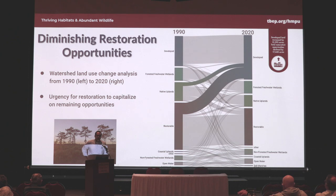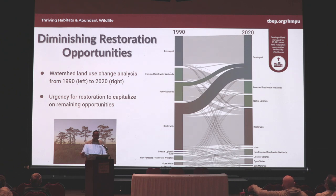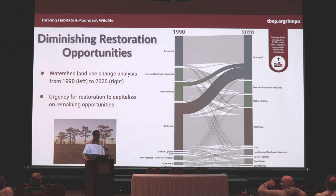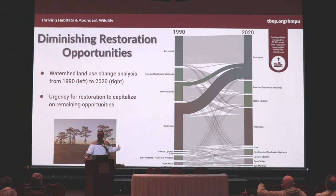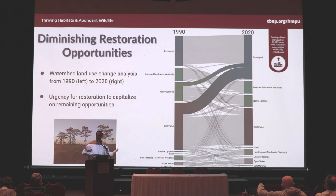A lot of the work we do as the estuary program is trying to find opportunities to do restoration activities, but we know those opportunities are diminishing as we continue to develop. The graph shown is basically showing the progression of different land uses — basically the developed environment versus the habitats we're interested in managing — from 1990 versus 2020. The restorable brown bar has diminished a lot. Over that 30-year period, developed lands have increased by about 15,000 acres and the available restorable lands have decreased by about 17,000 acres. The next 30 years will probably see the same trend.